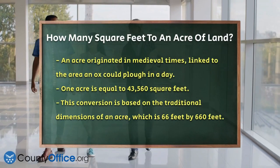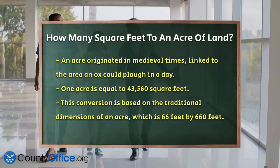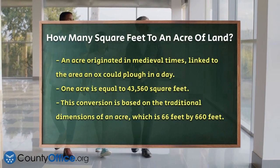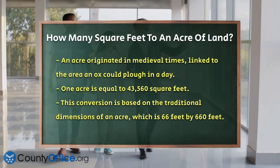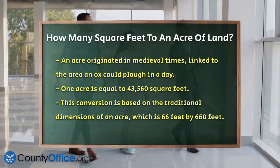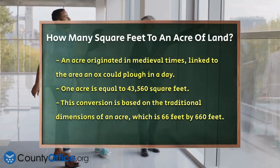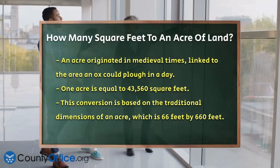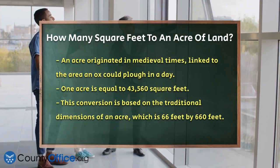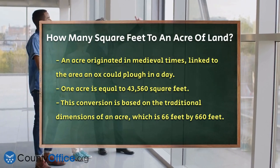But how do we convert square feet to acres? Here's the key: one acre is equal to 43,560 square feet. This number comes from the fact that an acre is traditionally defined as an area of 66 feet by 660 feet, which when multiplied together gives us 43,560 square feet.